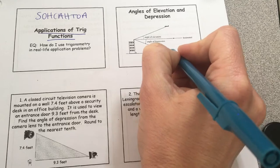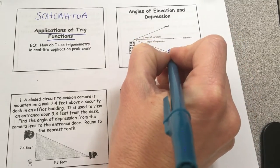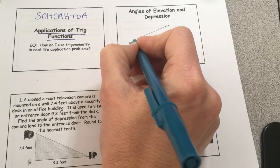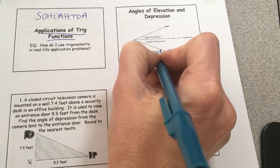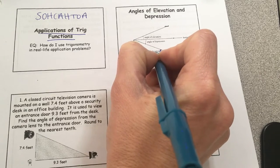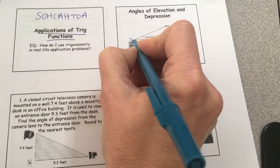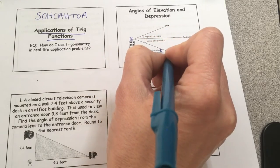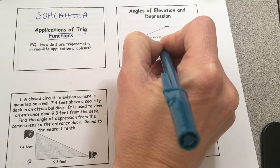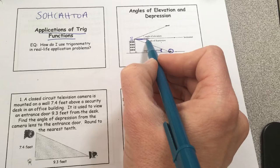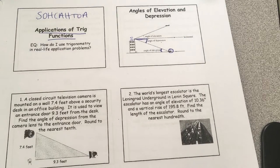Let's say you've got a person on a boat looking up to the top of a tower. This angle is called the angle of elevation. If you have a person on top of the tower looking down at the boat, this angle is called the angle of depression — notice it's on the outside of the triangle.